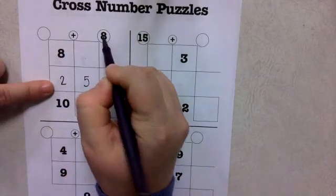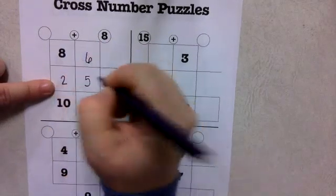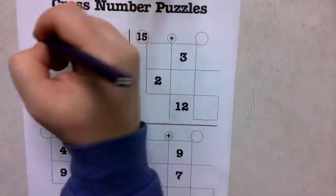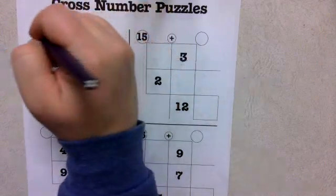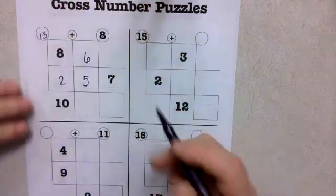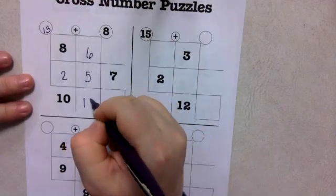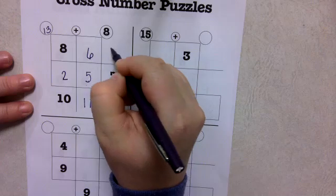2 plus something is 8, that would be 6, 5 plus 8 is 13, 6 plus 5 is 11, 8 plus 6 is 14.